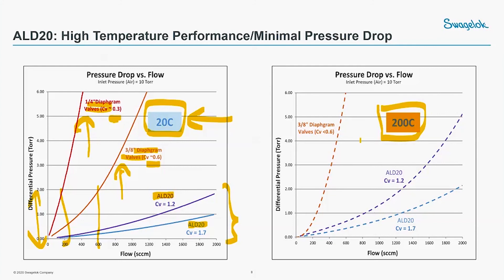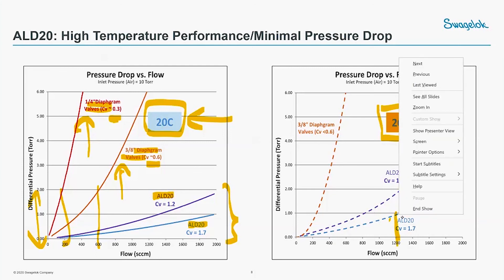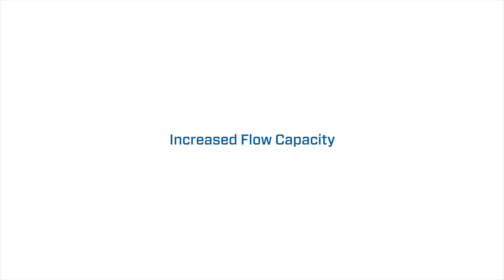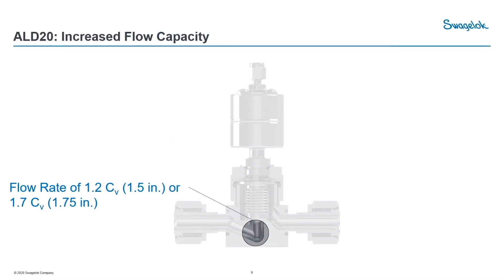At 200°C, the LD20 still exhibits very good flow consistency, maintaining a good flow rate up to 1,002 and a maximum of 1,004, while minimizing differential pressure ideally at two Torr. The three-eighths-inch diaphragm valve can achieve a sustainable flow rate, but it starts to lose efficiency at 400 sccm at 200°C, compared to 600 sccm at 20°C.